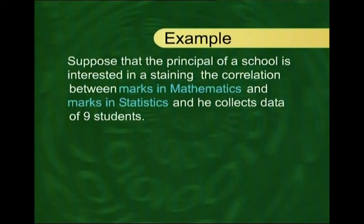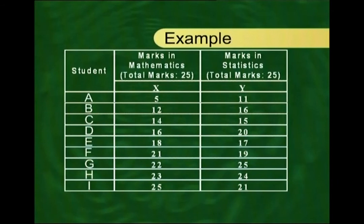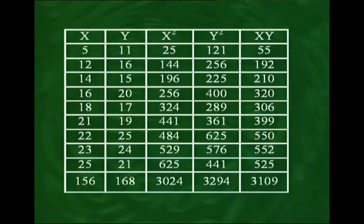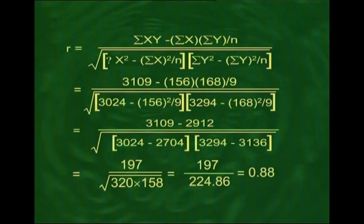Let us apply this concept to an example. Suppose the principal of a school is interested in ascertaining the correlation between marks in mathematics and marks in statistics. He collects data for nine students: marks in mathematics are 5, 12, 14, and so on; marks in statistics for the same students are 11, 16, 15, and so on. To compute the correlation coefficient, we construct columns of x², y², and xy, obtain all the relevant sums, and substituting them in the formula for r, the answer comes out to be 0.88.